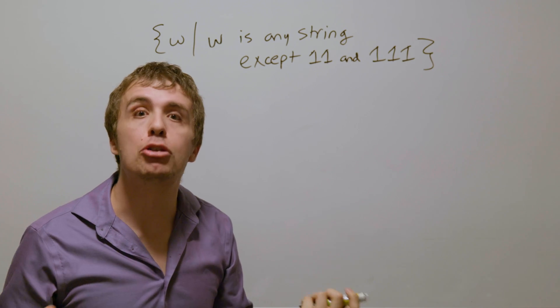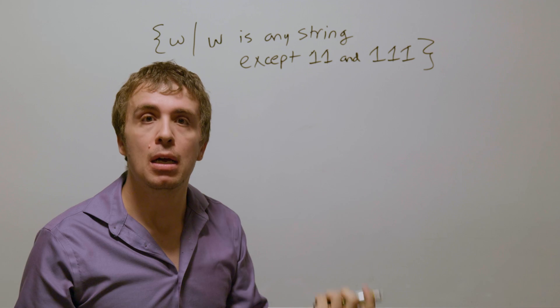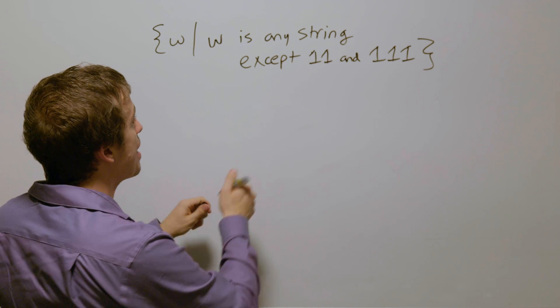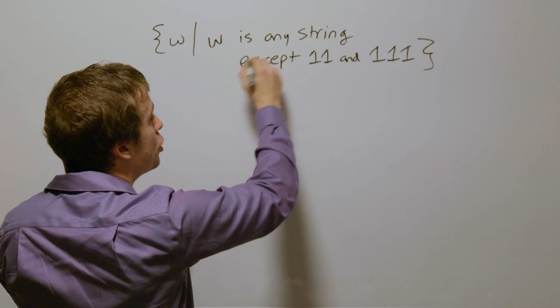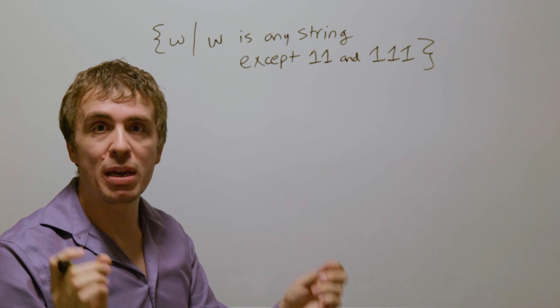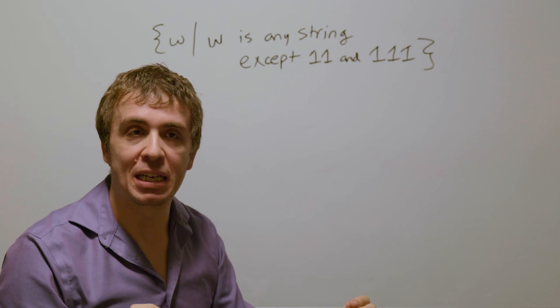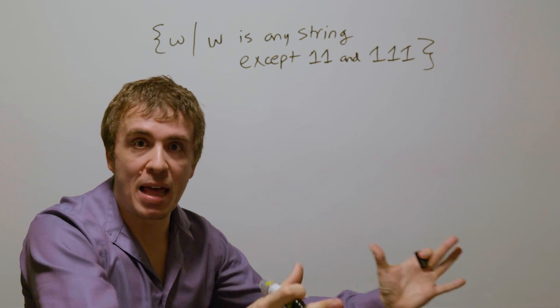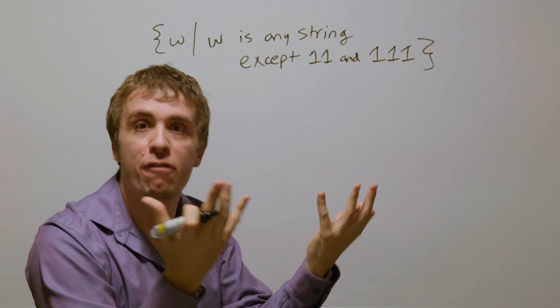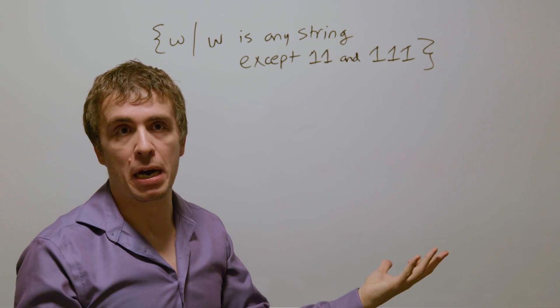Well, this is where closure under complement can help us. Closure under complement says if we ignore the condition right here and say if w is 11 or 111, then we should accept, make a DFA for that thing, and then flip final and non-final states. Therefore we'll be done.